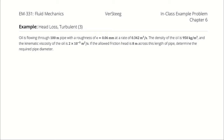Oil is flowing through 100 meters of pipe with a roughness of 0.06 millimeters at a rate of 0.342 cubic meters per second. The density of the oil is 950 kilograms per cubic meter and the kinematic viscosity of the oil is 2 times 10 to the negative 5th meters squared per second. If the allowed friction head is 8 meters across this length of pipe, determine the required pipe diameter.